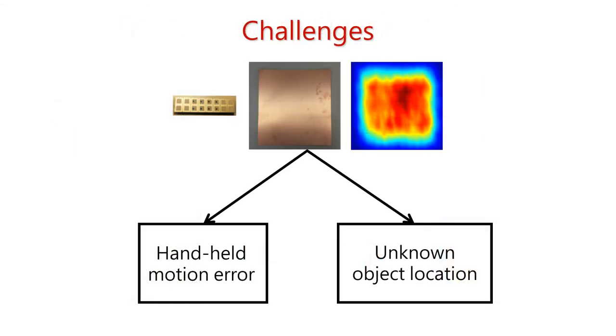It turns out that there are two challenges. The first one is with handheld motion error. Recall that imaging systems need to move the antenna precisely in a linear motion. But when you move it via human hand, there will be motion errors. For the second challenge of unknown object location, the object could be hidden from line of sight. So without knowing the object location, the quality of the image would be degraded severely. Throughout the rest of the talk, I'm going to focus on these two key challenges and what we did to solve them.